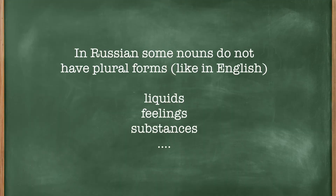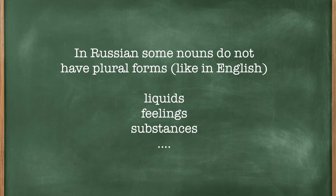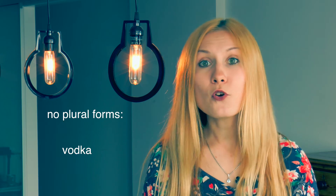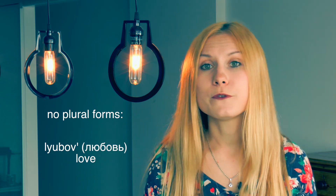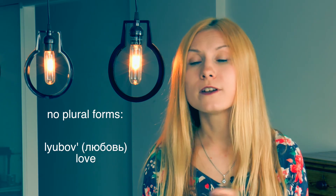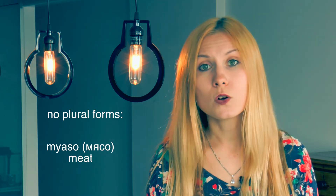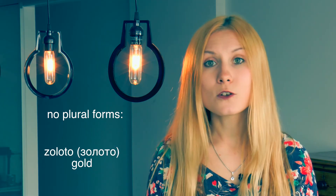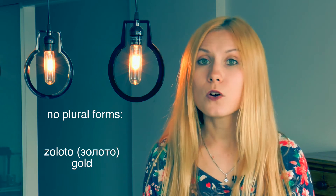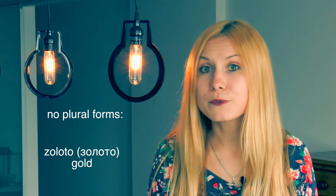And that's all with the hard parts, guys, I promise. Now let's speak about simple parts. Like in English, in Russian some nouns don't have plural forms — like liquids, feelings, some substances. I will give you some examples here. Водка — it doesn't have a plural form because it's a liquid. Любовь — love, it's a feeling, no plural form. Мясо — meat. Золото — gold. No plural forms as well.